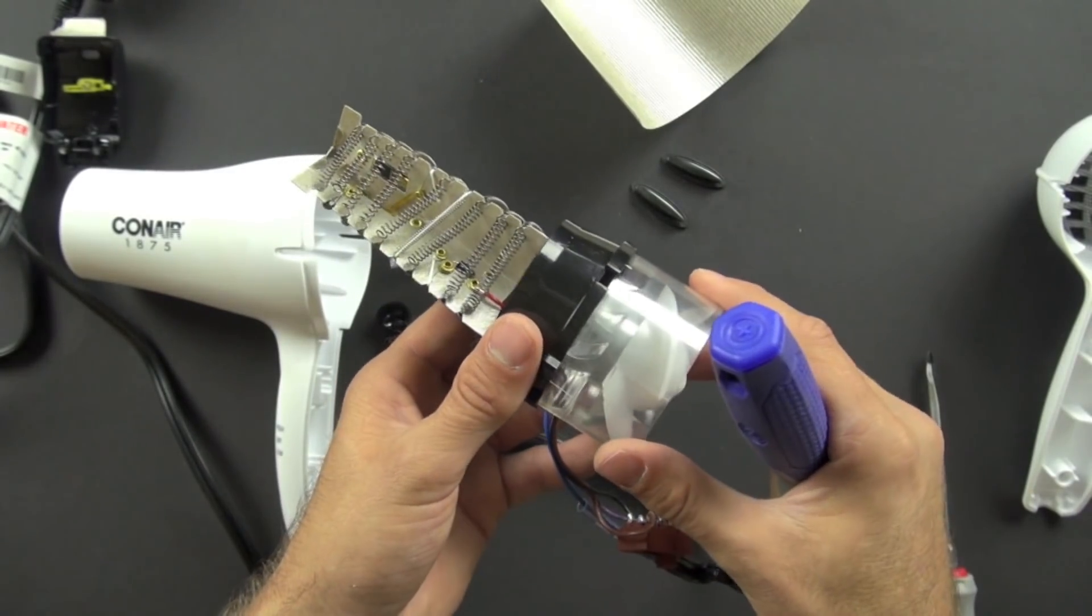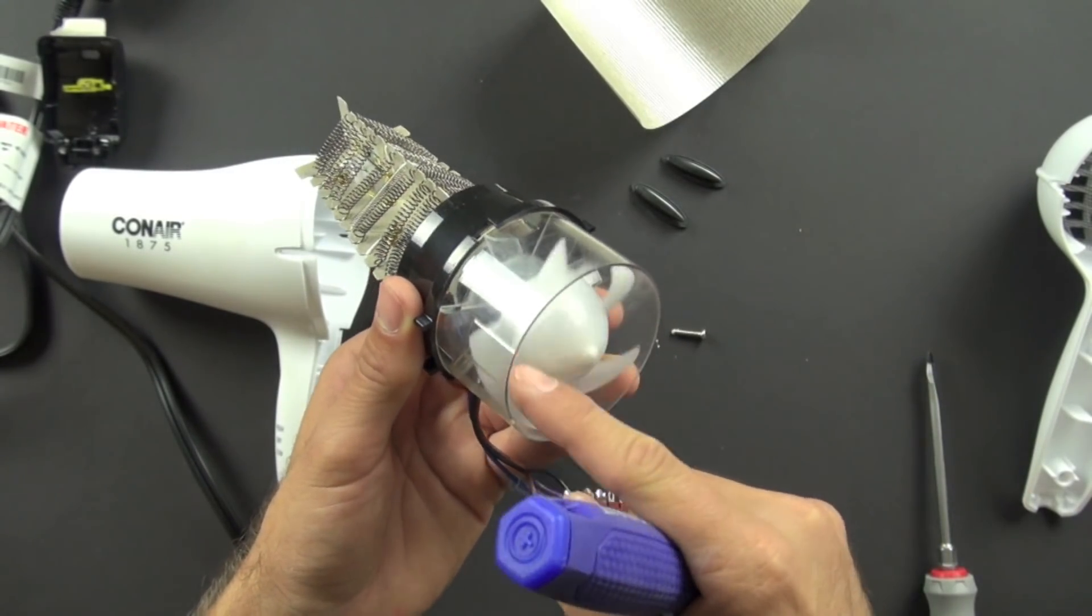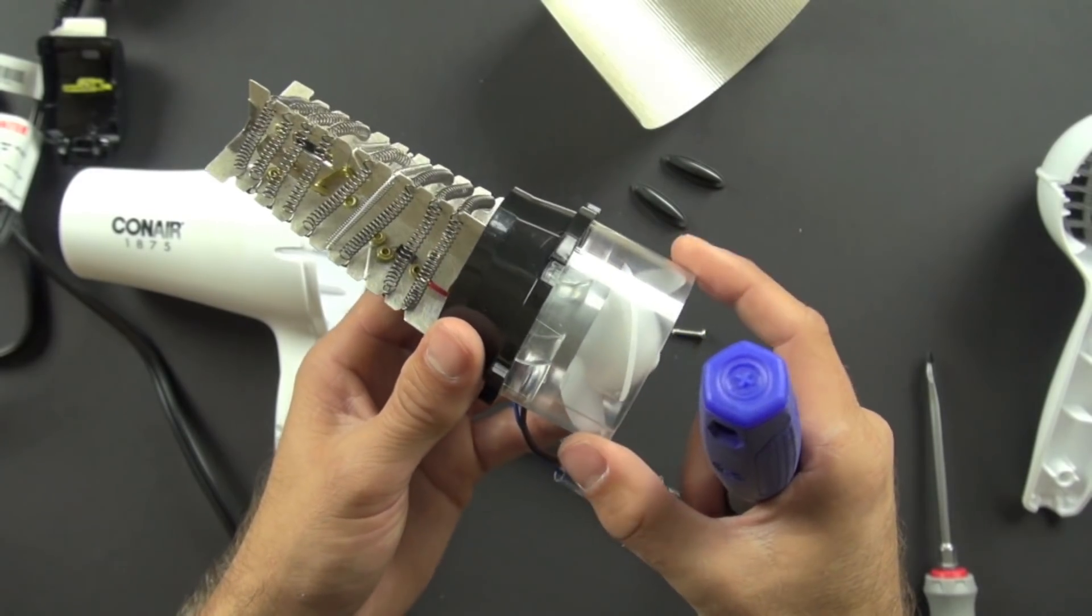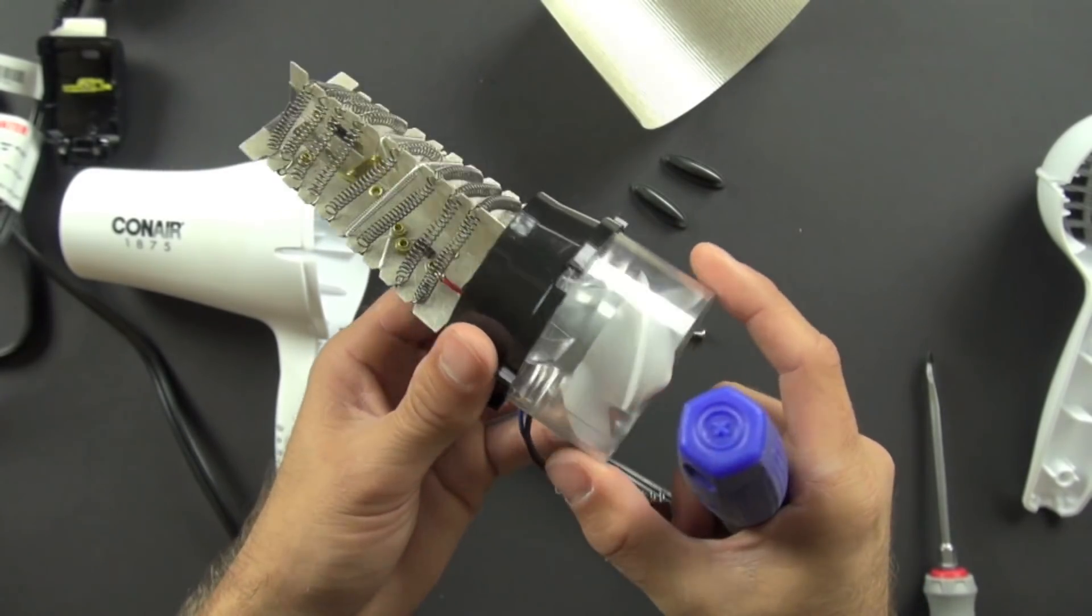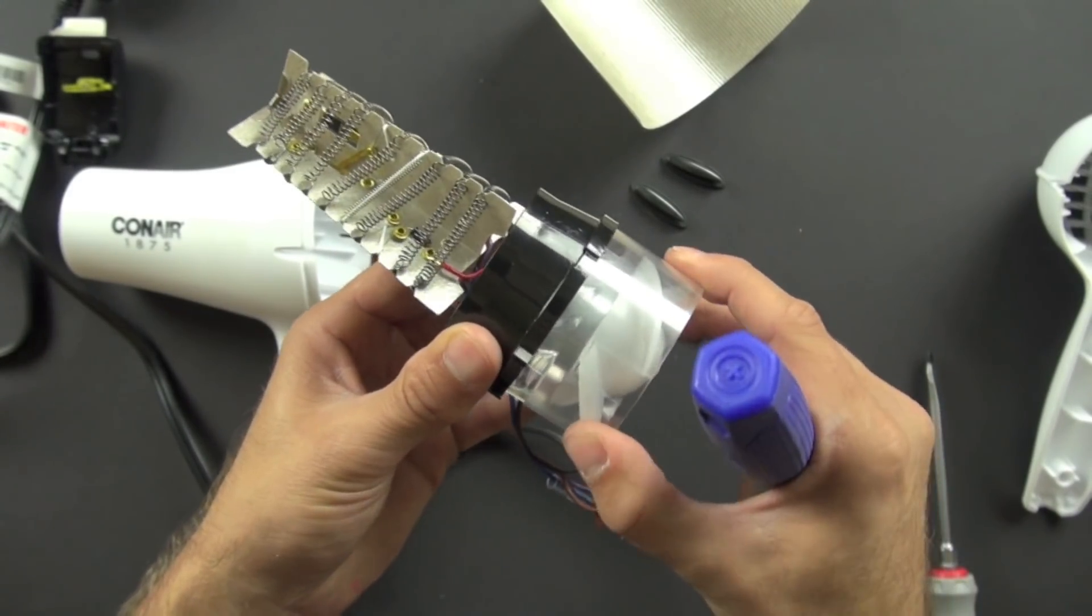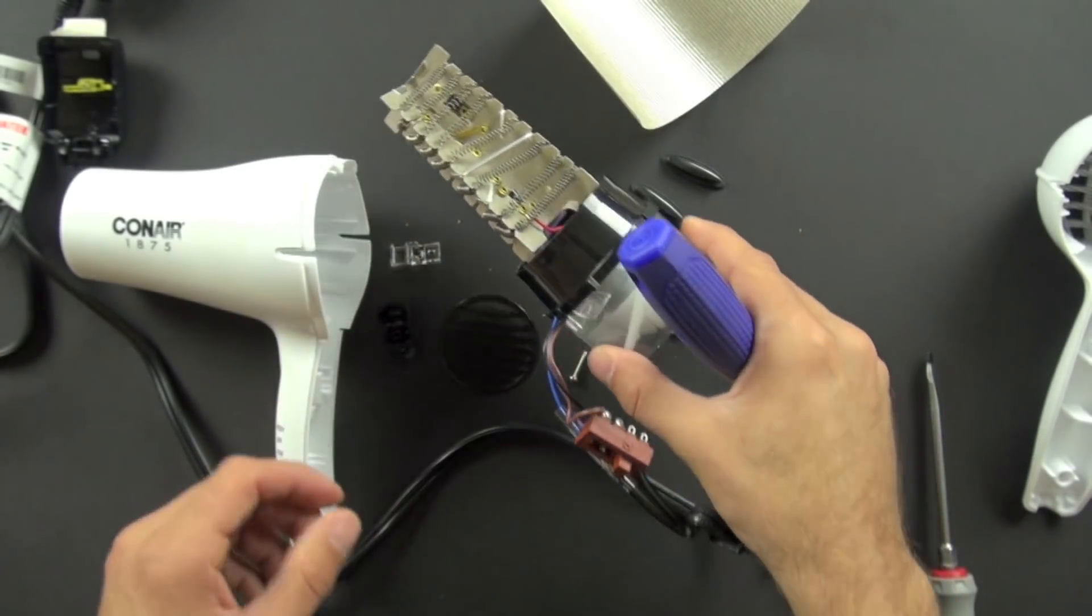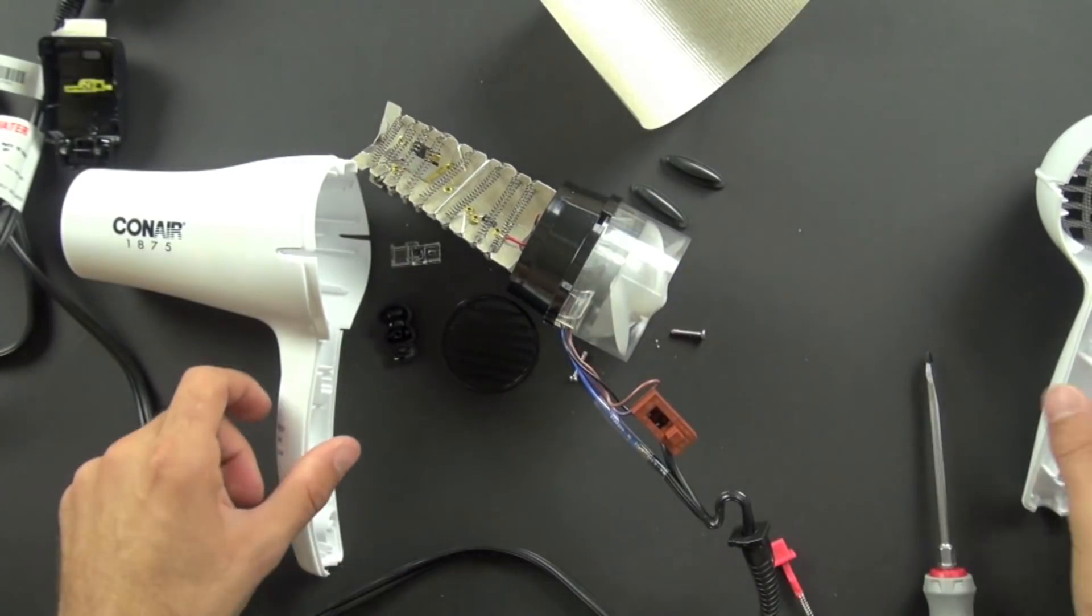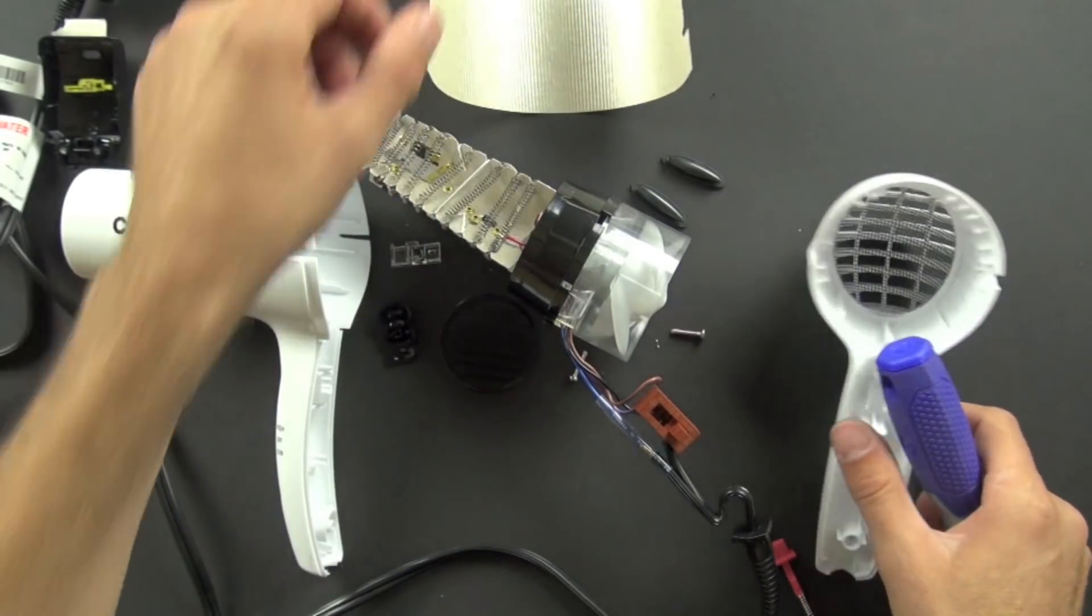In any case, this is again a plastic propeller and looks like an acrylic housing here or clear plastic housing. And then we have another bezel and this just helps to direct the airflow and also hold the motor in place. But that's the Conair 1875 hairdryer and I hope you've enjoyed it.